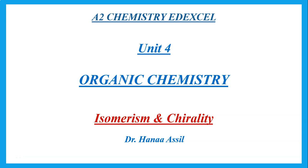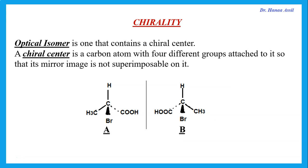Hello, this is the third and final part of the review on Unit 4 in A2 Chemistry. We're talking about organic chemistry and we're going to be talking about spectroscopy. The first thing we need to know in organic chemistry is isomerism and chirality. We said chirality is due to having optical isomers.